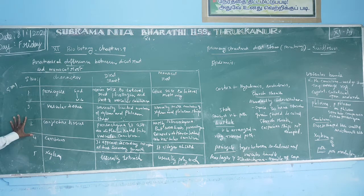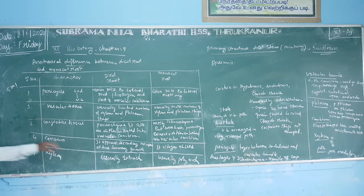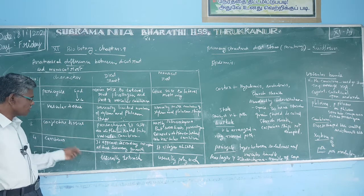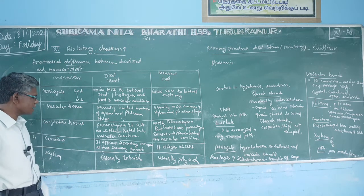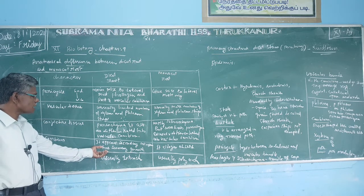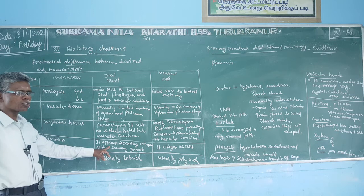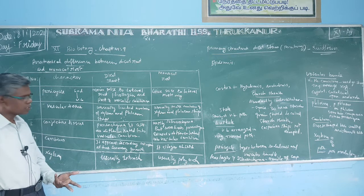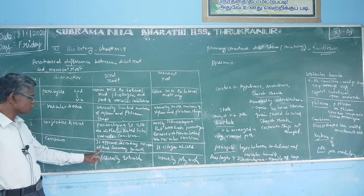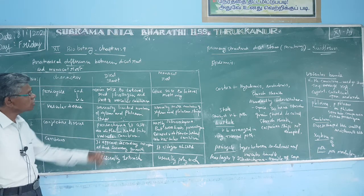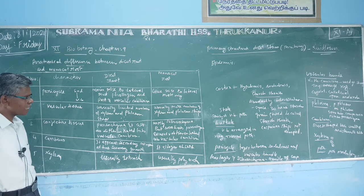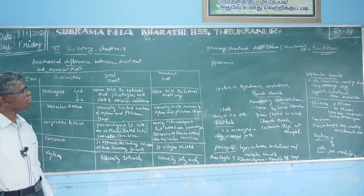Next is cambium. The cambium is located between the xylem and phloem. It is a secondary meristematic tissue. At the time of secondary growth, vascular cambium appears. When vascular cambium appears, secondary growth begins. In monocot root, cambium tissue is absent — there is no secondary growth.